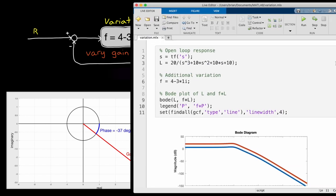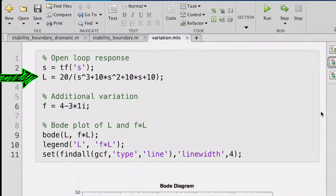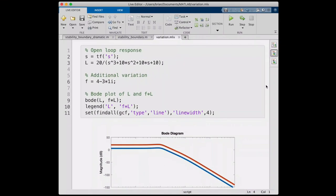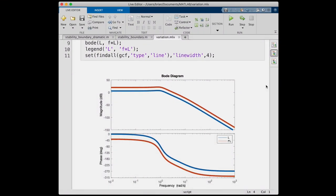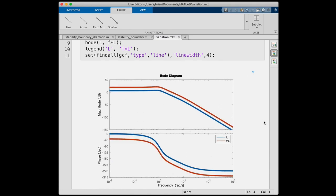And we can check this out in MATLAB. I have the transfer function L, and I've created a multiplier, f equals 4 minus 3i. And now I'll plot the Bode plot for both L and f times L. And check this out. L is the blue line, and the modified f times L has been raised by 14 decibels, which is 5 times larger. And the phase has been lowered by about 37 degrees. So by multiplying our open-loop model by a complex number, we have a way to conveniently add phase and gain.